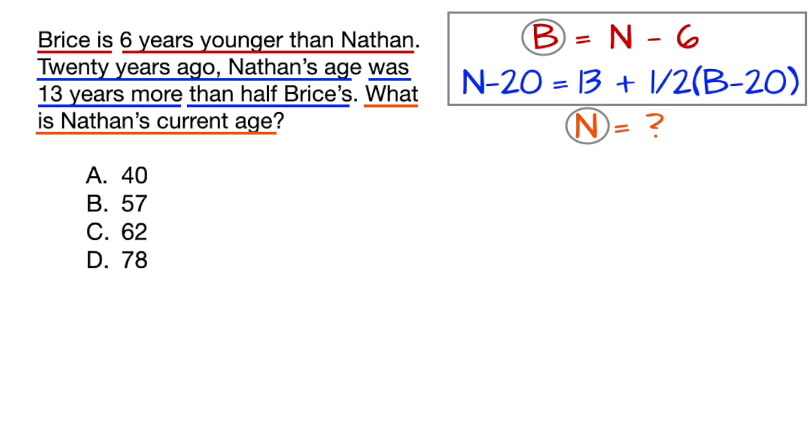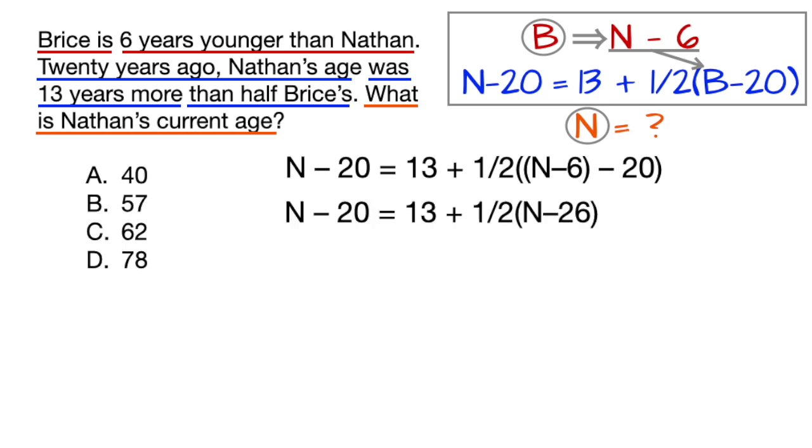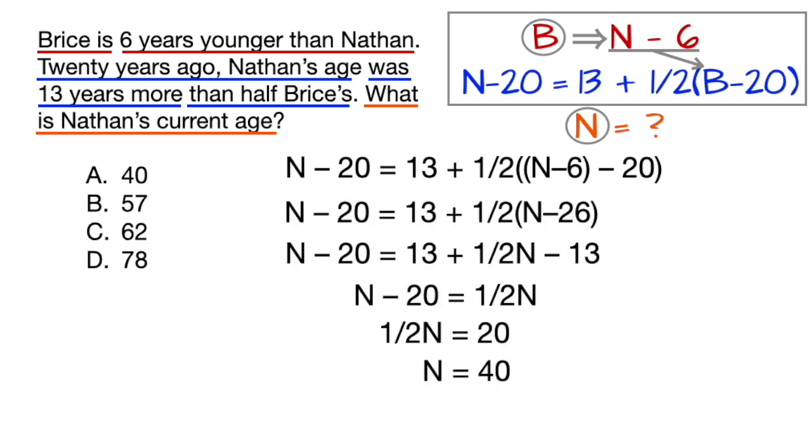And in this case, we already have the opposite variable B solved for N minus six, which means we could plug N minus six in for the B in the other equation to get something like this, and then follow through to solve for N to get Nathan's age.